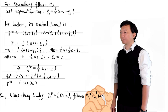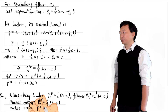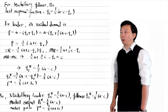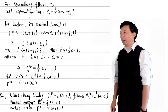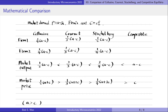For Stackelberg firms, we can obtain the leader firm's output as one-half times (A minus C). The market output is three-fourths times (A minus C). The Stackelberg market price is one-fourth times (A plus 3C). I tabulate the results to compare the collusive, Cournot, Stackelberg, and competitive equilibria.